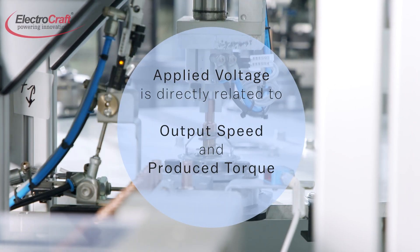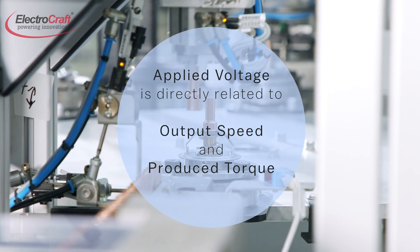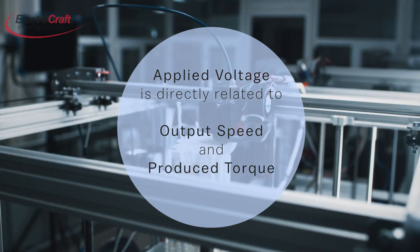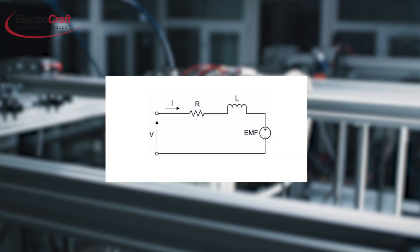The applied voltage has a direct relationship to the motor's output speed and the amount of torque produced. Let's look at a typical brushed DC motor circuit.